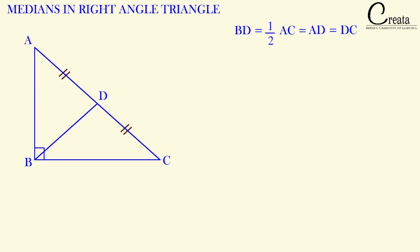Let's prove this property. We have triangle ABC with D as the midpoint of AC, so AD equals DC. BD is the median connecting vertex B with hypotenuse midpoint D. Let's take point E as the midpoint of BC, so BE equals EC. Let's join DE to get line segment DE.